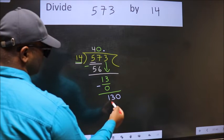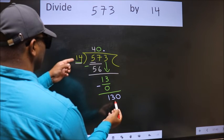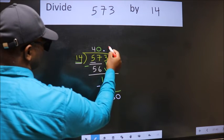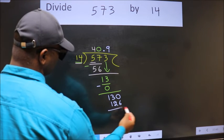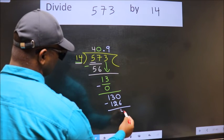So 130. A number close to 130 in 14 table is 14 nines, 126. Now we subtract. We get 4.